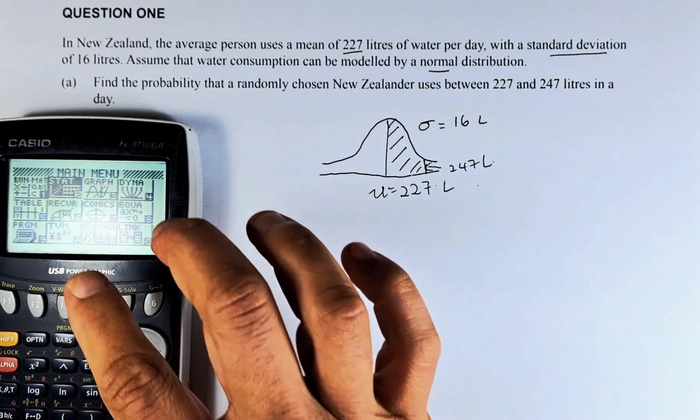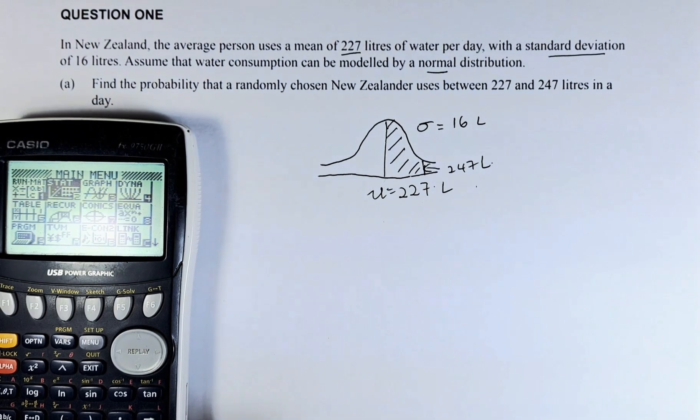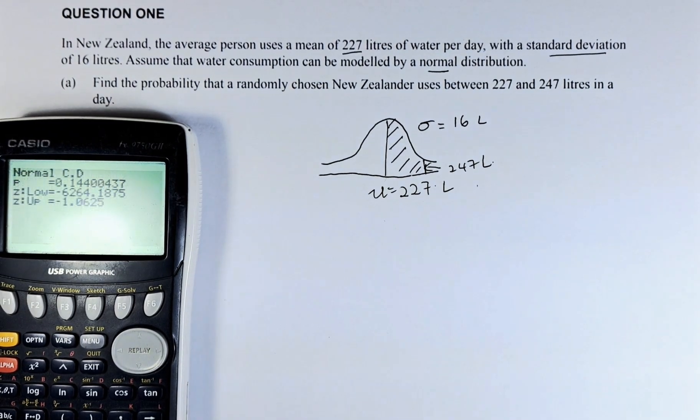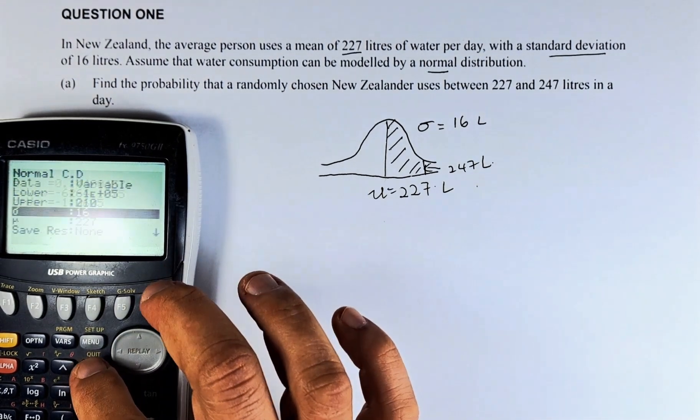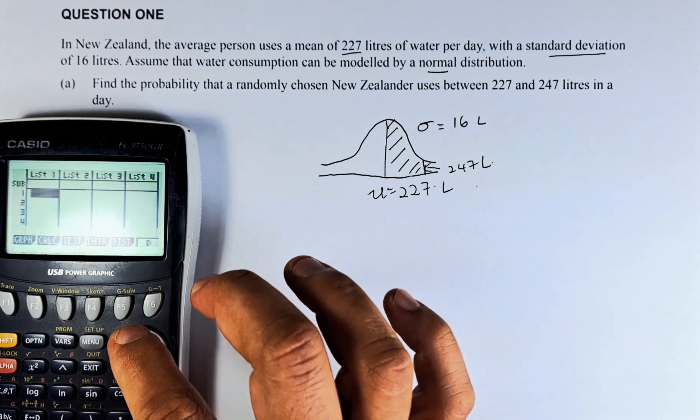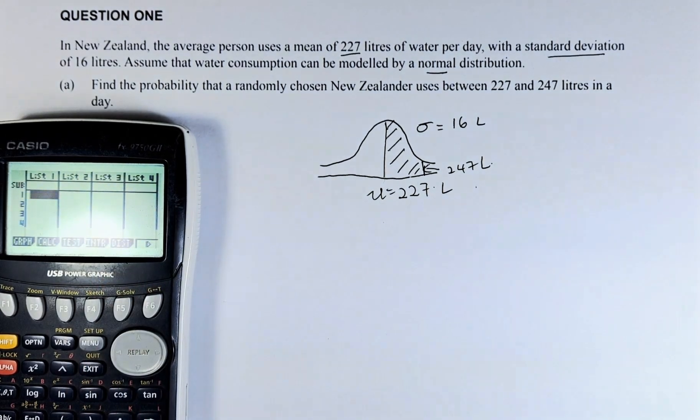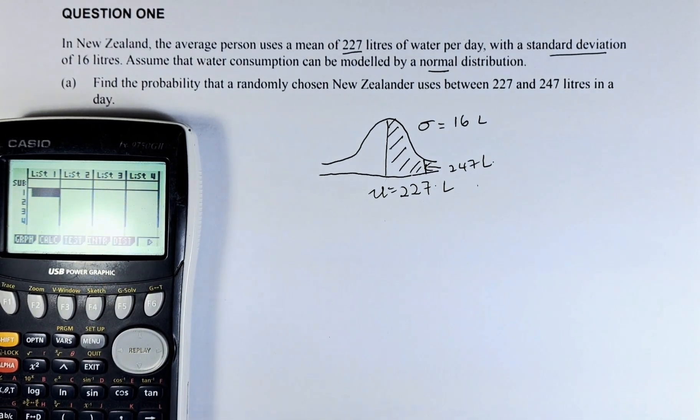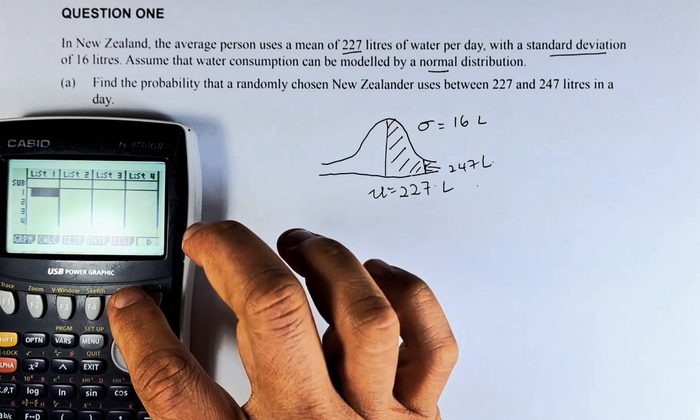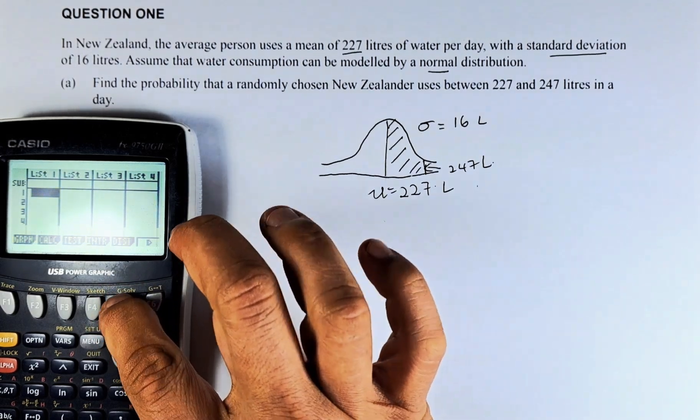Go to statistics. I hope you can see from the video there. Then we are going to exit, and then we are going to start putting in the values now. So to start with, you need to put the distribution. Distribution is F5. Press the distribution.